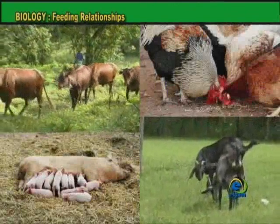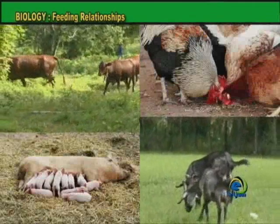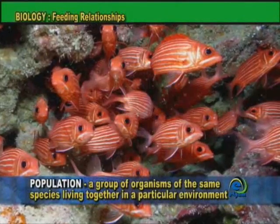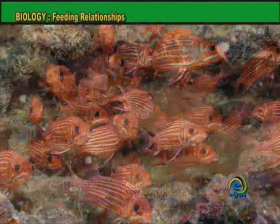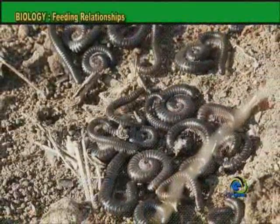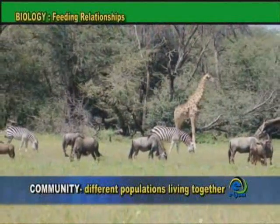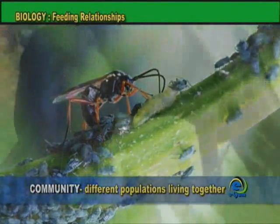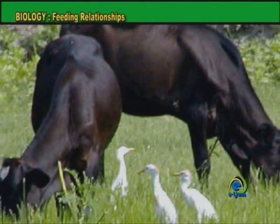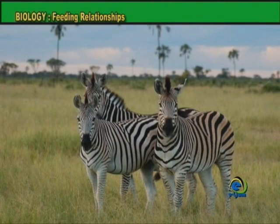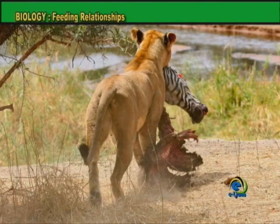Usually, different types of organisms live in the same environment. A group of organisms of the same species living together in a particular environment is called a population. For example, in a log, there may be a red ant population or a millipede population. Different populations living together make up a community. Some populations in a community have a close, permanent feeding relationship with one another. The predator-prey relationship is the most common feeding relationship within a community.